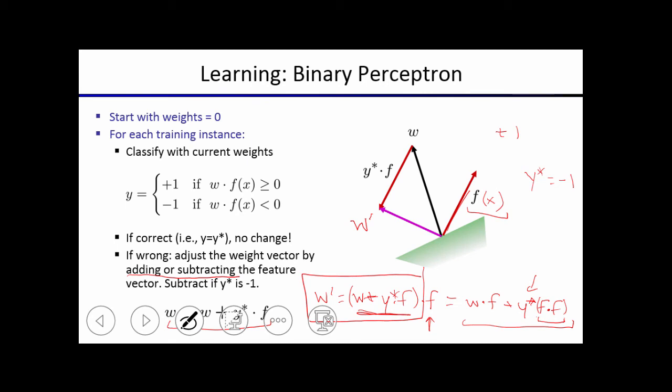So once you make this update, this is your new weight vector, then your decision boundary, instead of being at this location, it will instead move to be orthogonal to the weight vector. And this is after one update.